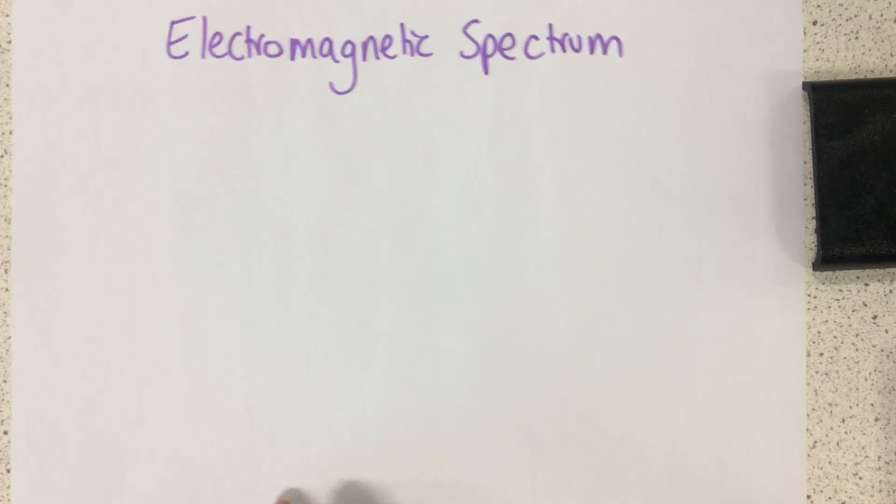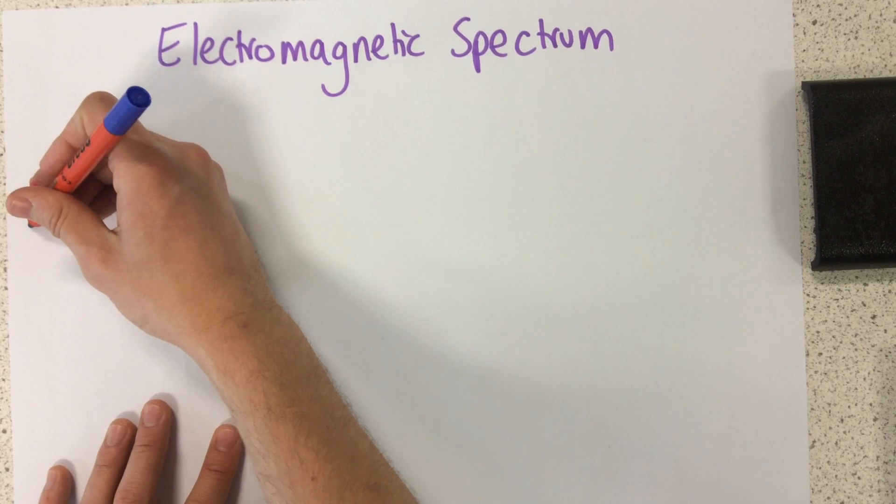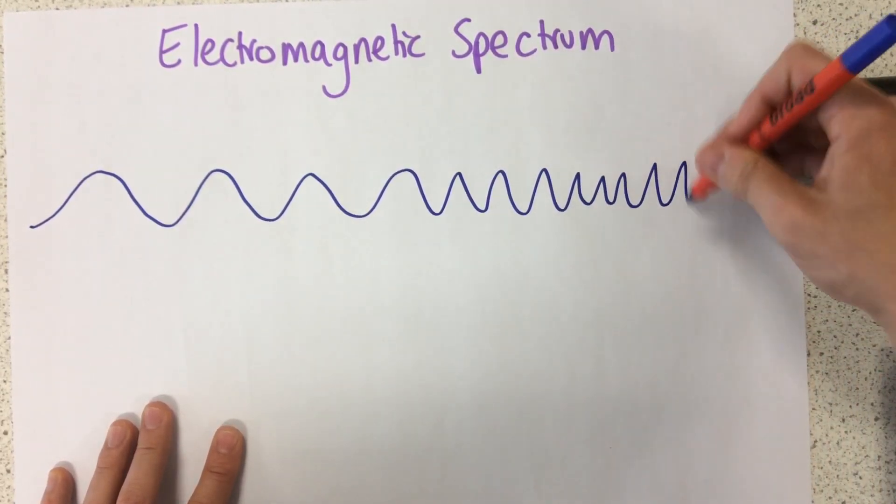Now, what the electromagnetic spectrum actually is, is it's just these different waves that have a different frequency.